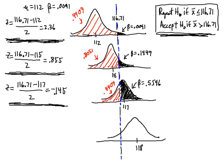There is almost a 100% chance that we would correctly reject the null hypothesis if the real population average was as bad as 112. Suppose the real population average is 115. Then the probability of accepting the null hypothesis goes up a little bit to about 19.5%.